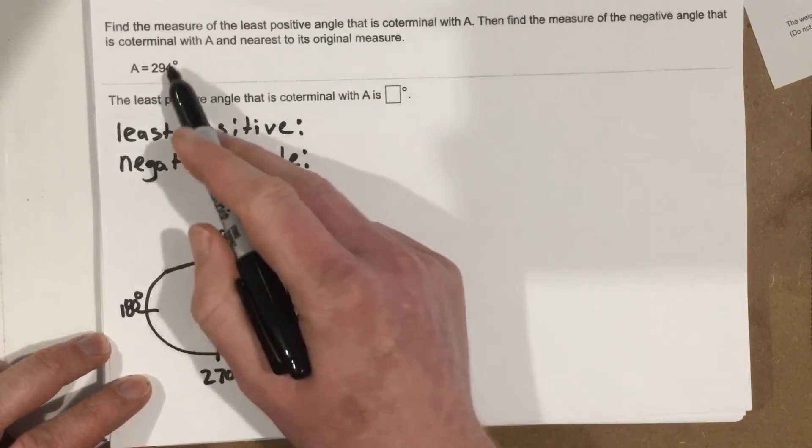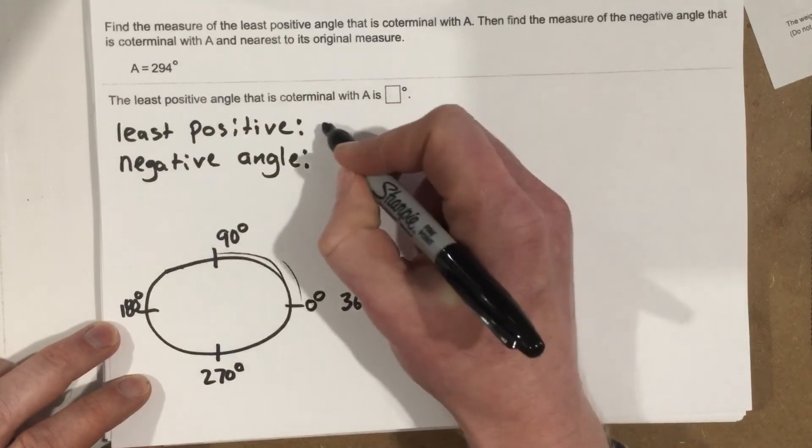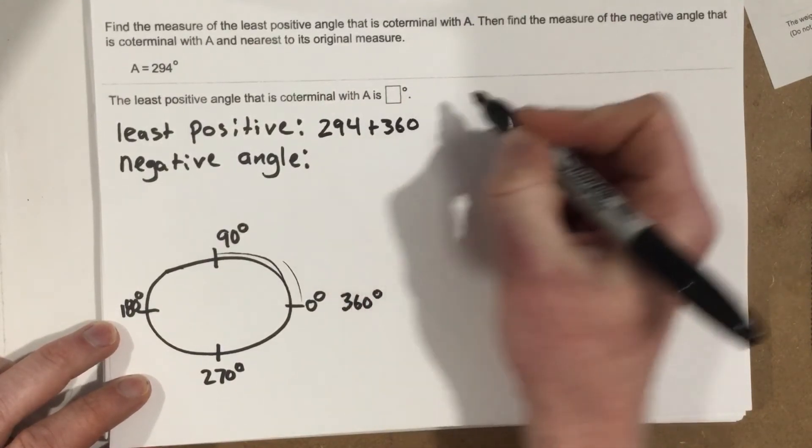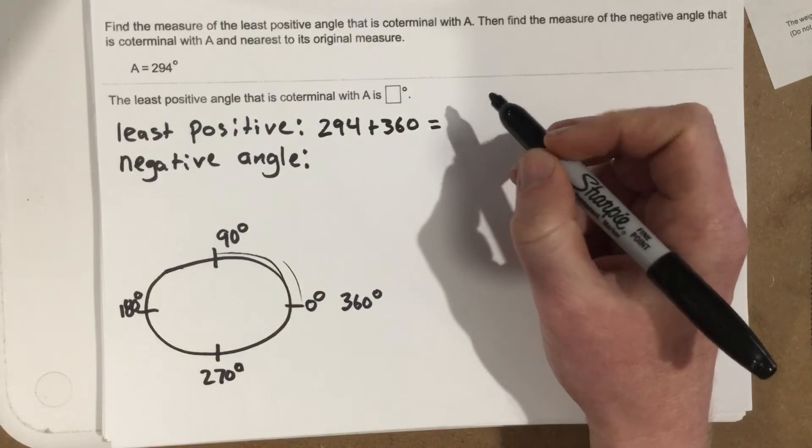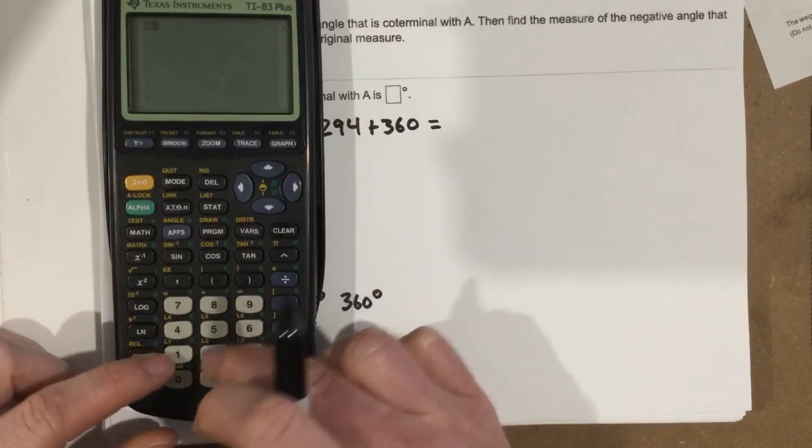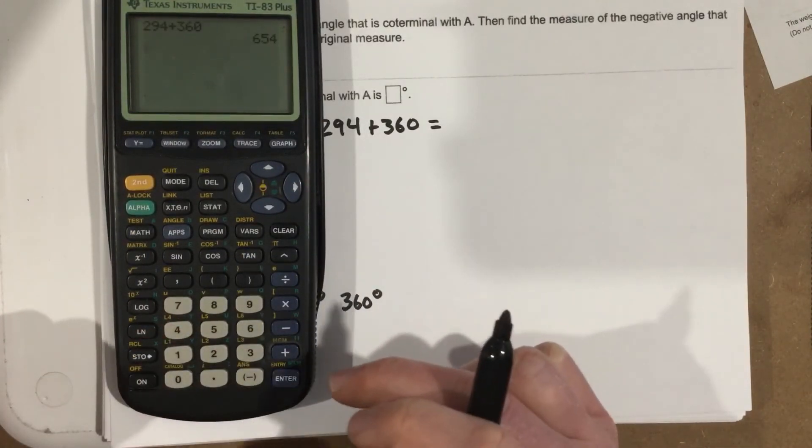So they want us to find the least positive coterminal angle of 294. Well, all I've got to do is take 294 and add 360. When I take 294 and I add 360, 294 plus 360 gives me 654.